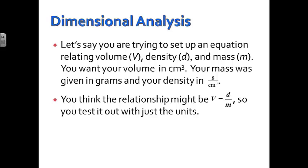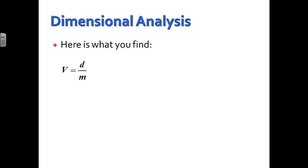Let's say you're trying to set up an equation relating volume V, density D, and mass M. You want your volume in cubic centimeters. Your mass was given in grams, and your density was given in grams per cubic centimeter. You think the relationship might be volume is equal to density over mass, so you test it out with just the units. This is the dimensional analysis part. Here's what you find. Here's our initial formula that we think might be right. Volume equals density over mass.